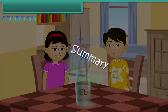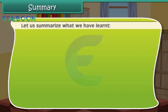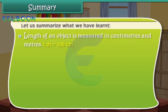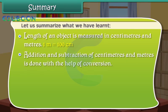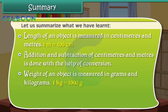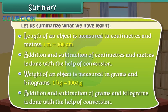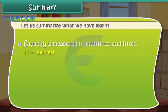Summary. Let us summarize what we have learned. Length of an object is measured in centimeters and meters. 1 meter is equal to 100 centimeters. Addition and subtraction of centimeters and meters is done with the help of conversion. Weight of an object is measured in grams and kilograms. 1 kg is equal to 1000 grams. Addition and subtraction of grams and kilograms is done with the help of conversion. Capacity is measured in milliliters and liters, and addition and subtraction of these units is also done with the help of conversion.